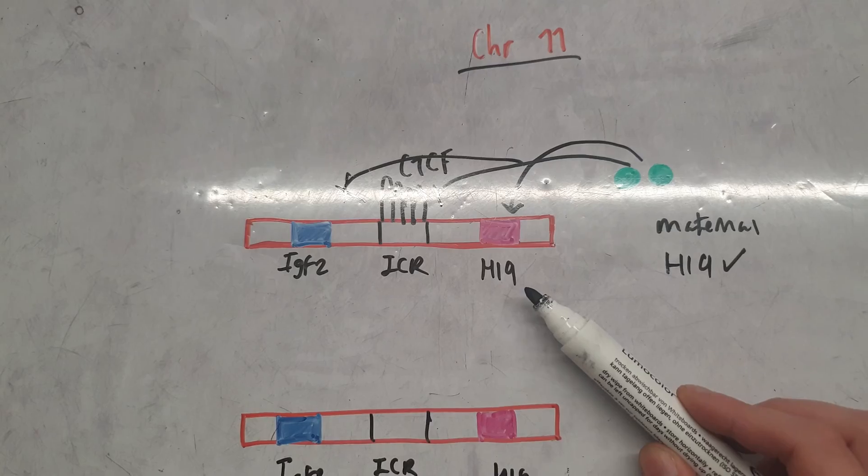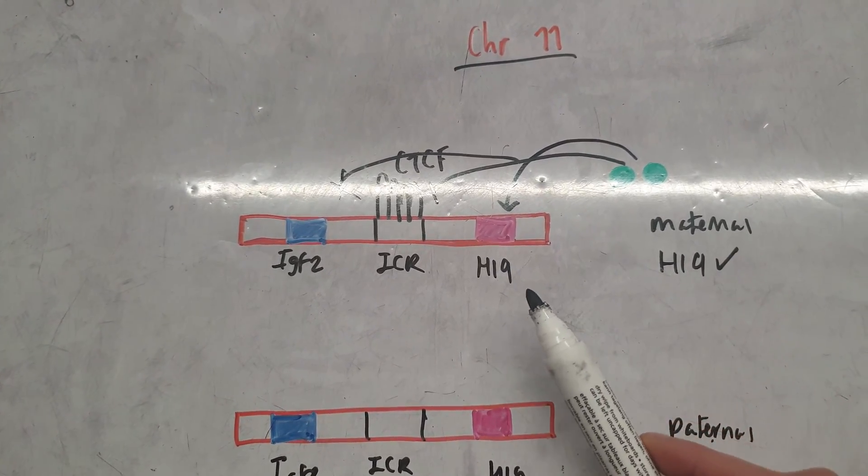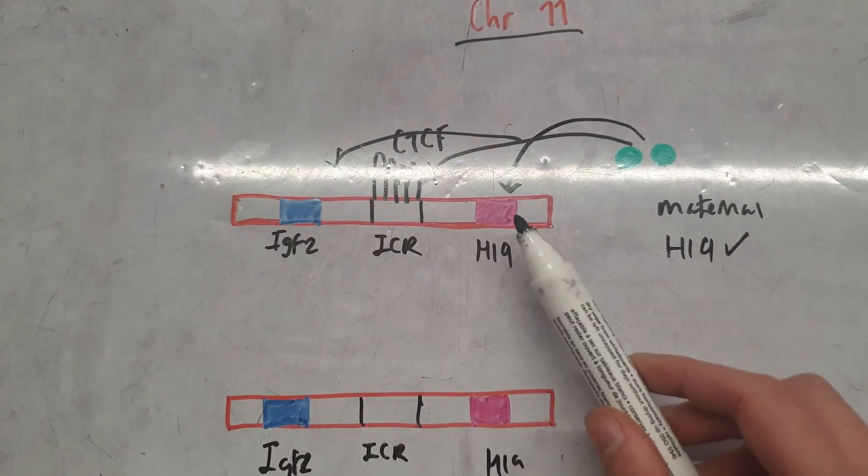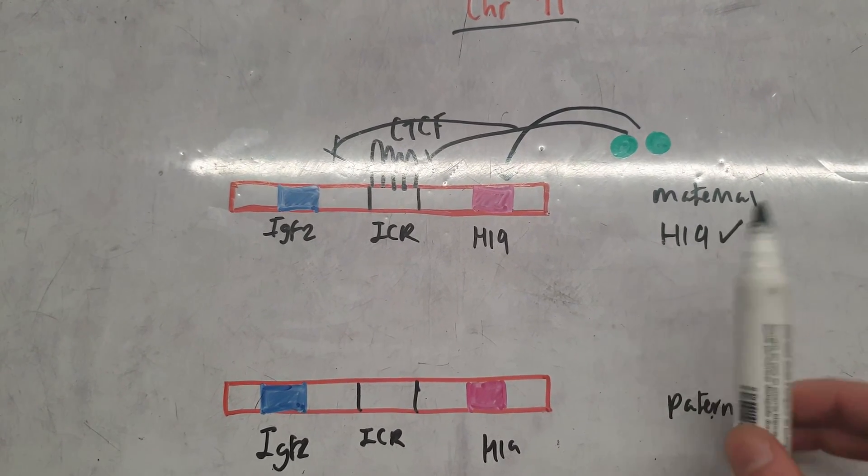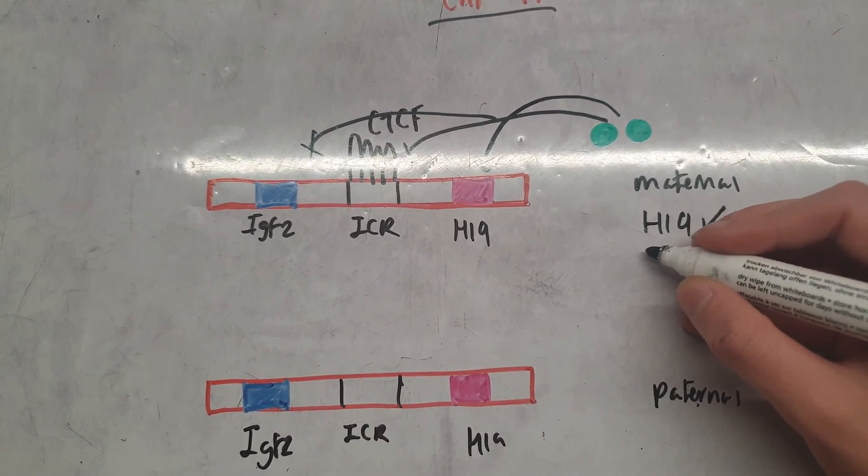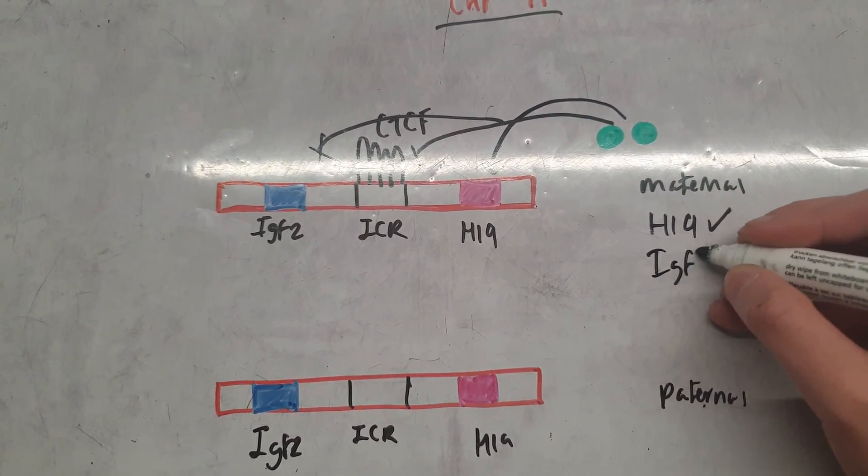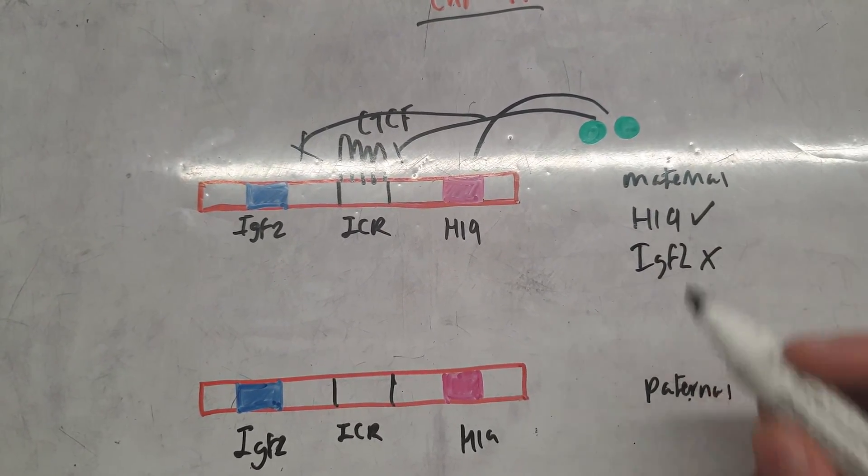So these enhancers are only able to upregulate the expression of H19 from the maternal chromosome. We have no IGF2 being expressed from the maternal chromosome.